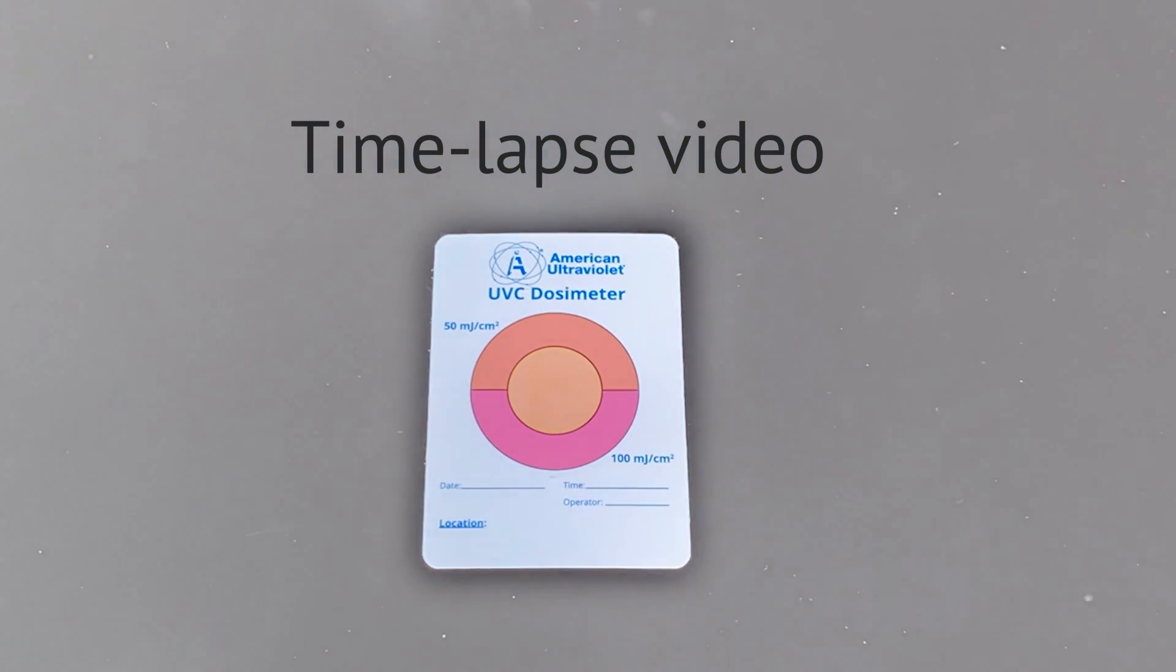To test whether or not a UV fixture is giving you the coverage you want, you can use a card called a dosimeter. The center circle changes color based on the dose of UV received.